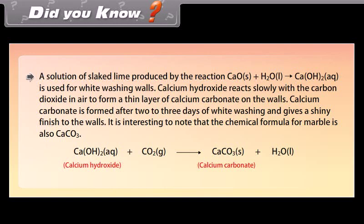Did you know? A solution of slaked lime produced by the reaction is used for whitewashing walls. Calcium hydroxide reacts slowly with carbon dioxide in air to form a thin layer of calcium carbonate on the walls. Calcium carbonate is formed after two to three days of whitewashing and gives a shiny finish. Interestingly, the chemical formula for marble is also CaCO₃.